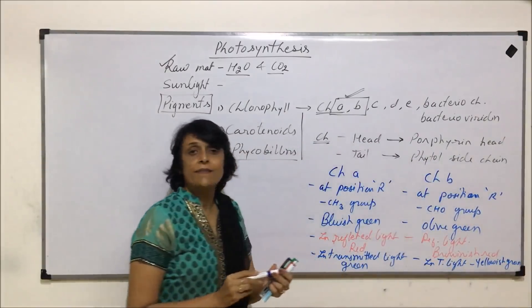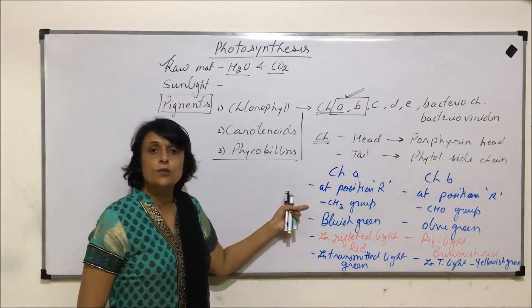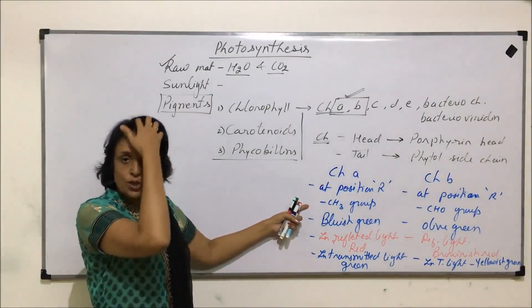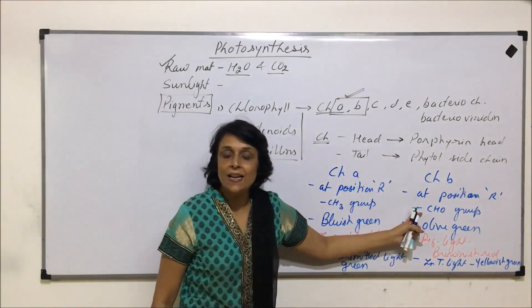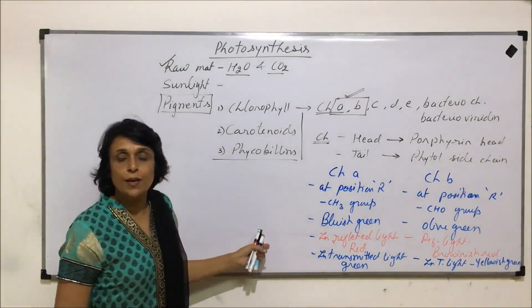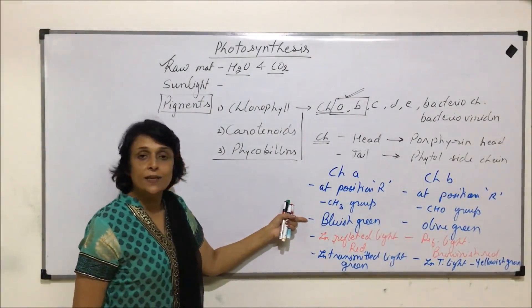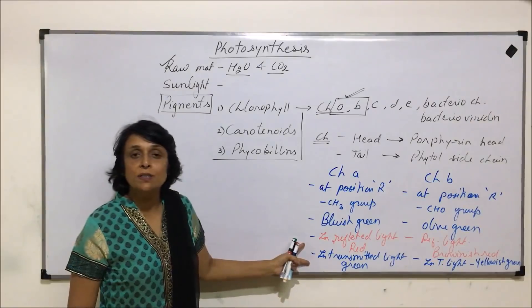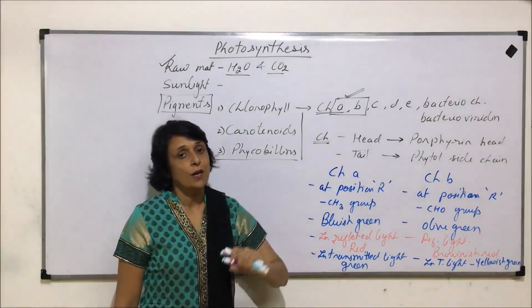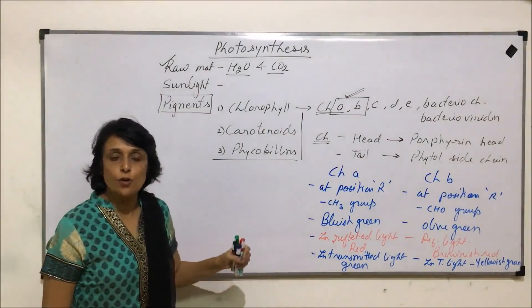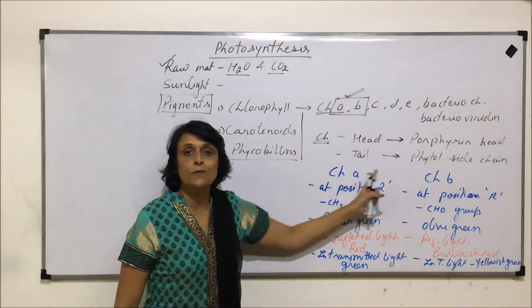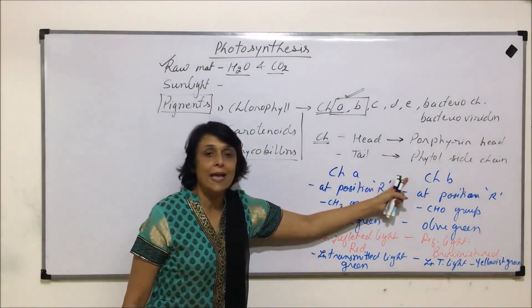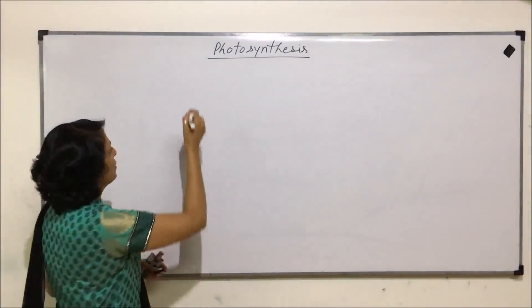So these colors are very important. The structural difference is at position R: A has a methyl group and B has an aldehyde group. Color-wise there are also differences — the natural color is different, and in reflected and transmitted light they also look different. Now let us look at the structure of chlorophyll.